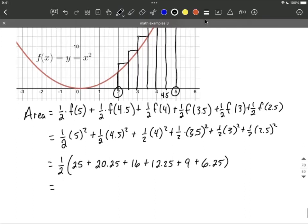Now if I add together what's inside of our parentheses, we end up with 88.75. If we take half of that, we get 44.375.